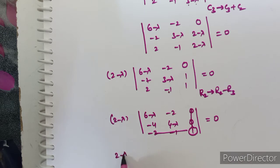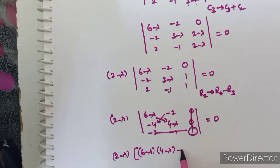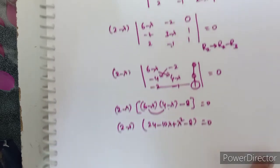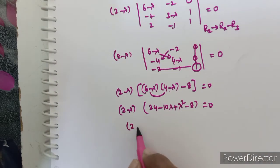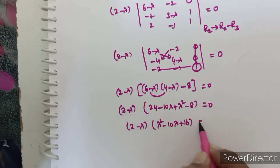Using the 2×2 determinant formula AD - BC: (2-λ)[(6-λ)(4-λ) - (-2)(-4) + 8] = 0. Expanding: (2-λ)[24 - 4λ - 6λ + λ² - 8] = 0, which simplifies to (2-λ)(λ² - 10λ + 16) = 0.